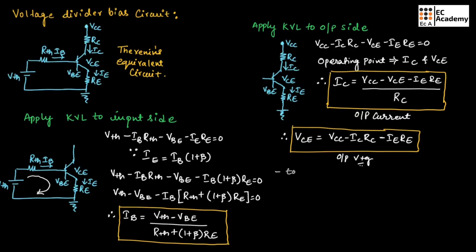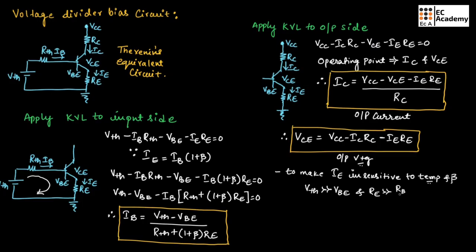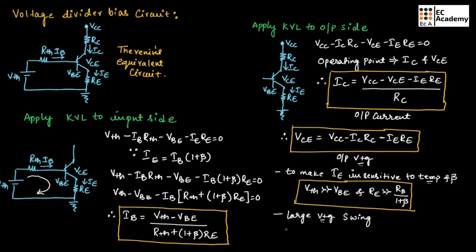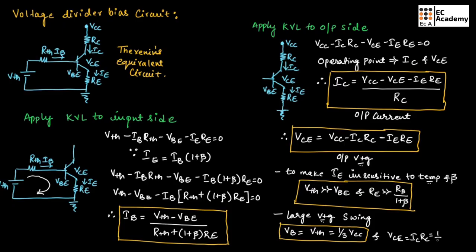To make Ie insensitive to temperature and beta variations, we need Vth >> Vbe and Re >> (Rth / (1 + beta)). Also, to provide a large voltage swing, we keep Ve = Vth ≈ (1/3)·Vcc and Vce = Ic·Rc ≈ (1/3)·Vcc. This completes the discussion of the voltage divider bias circuit.